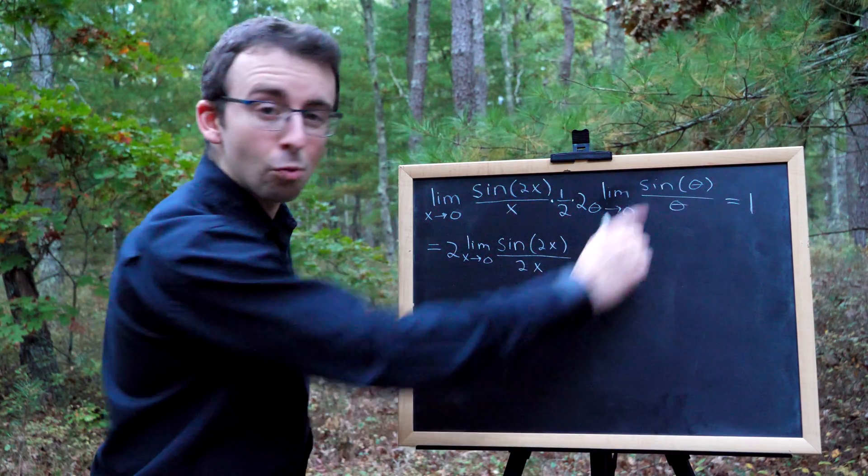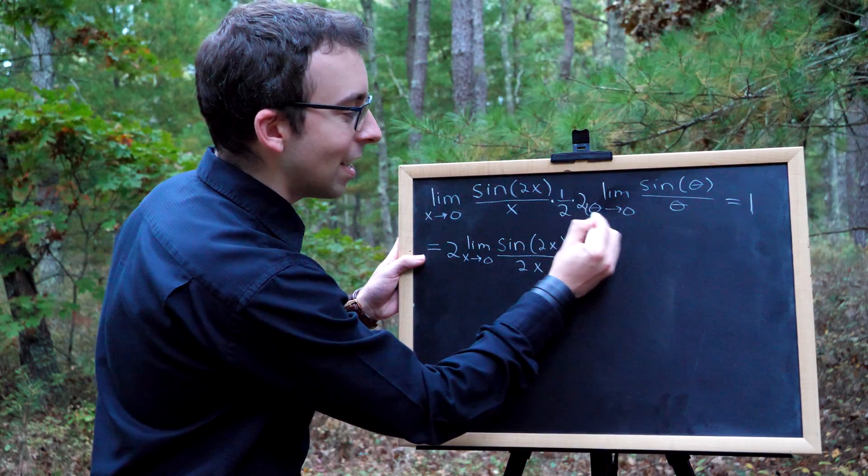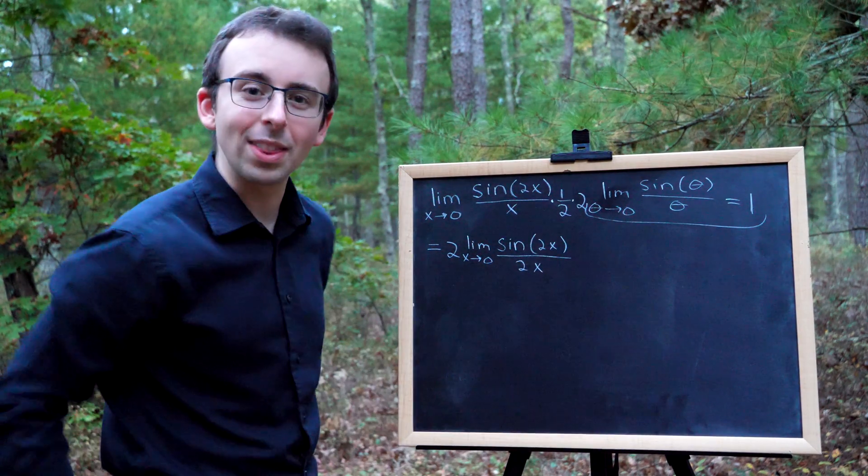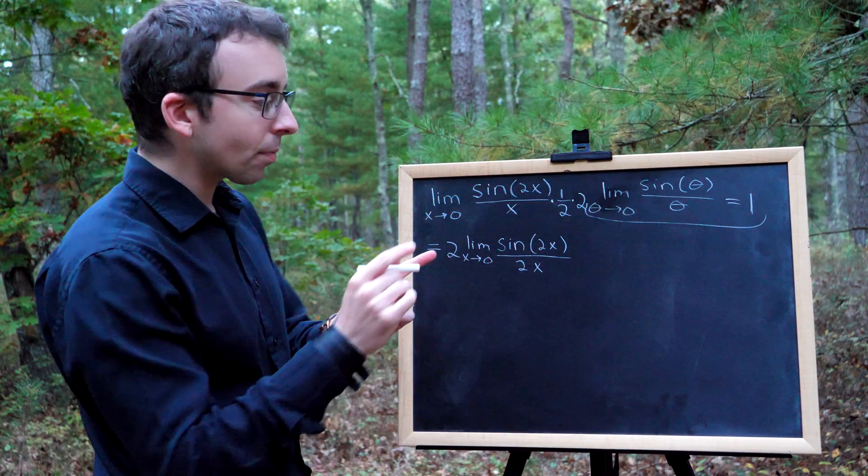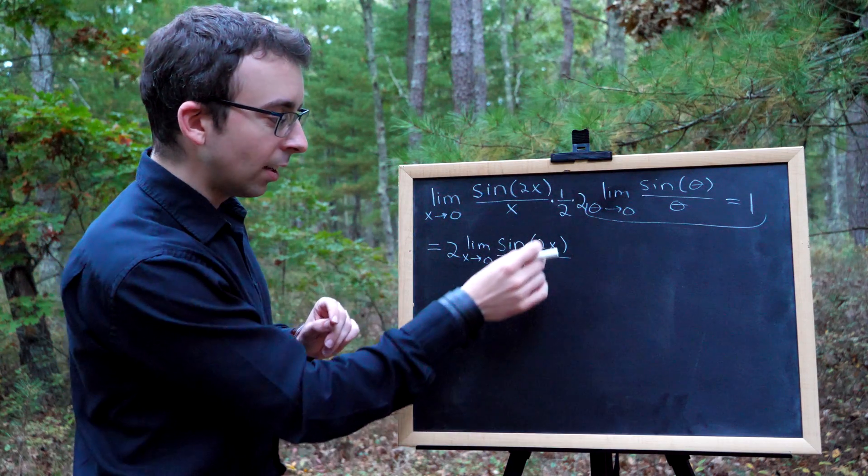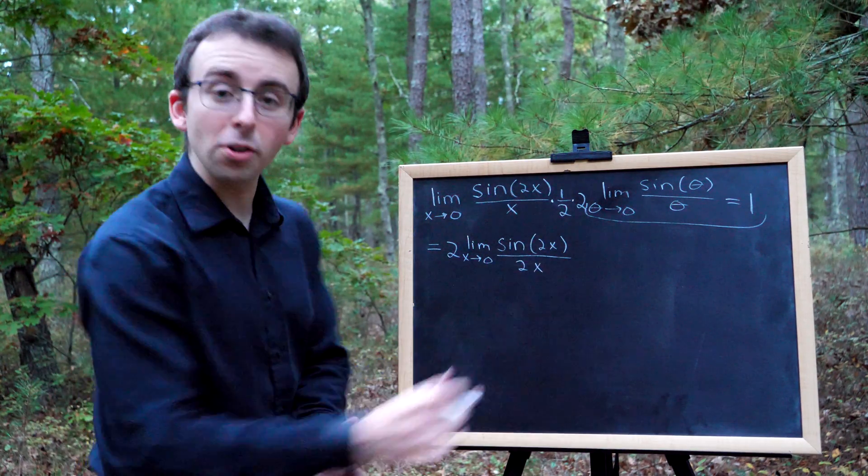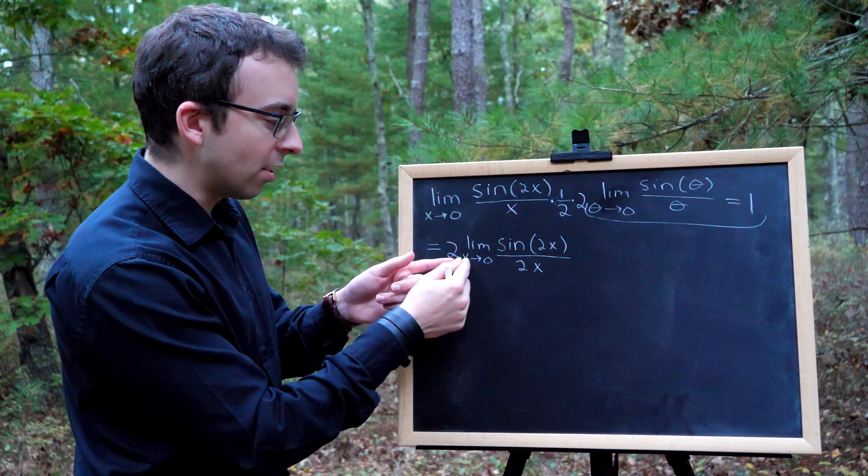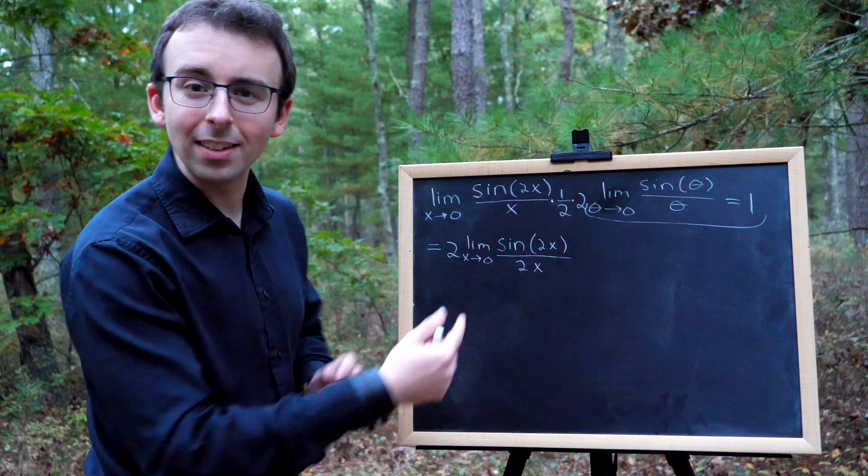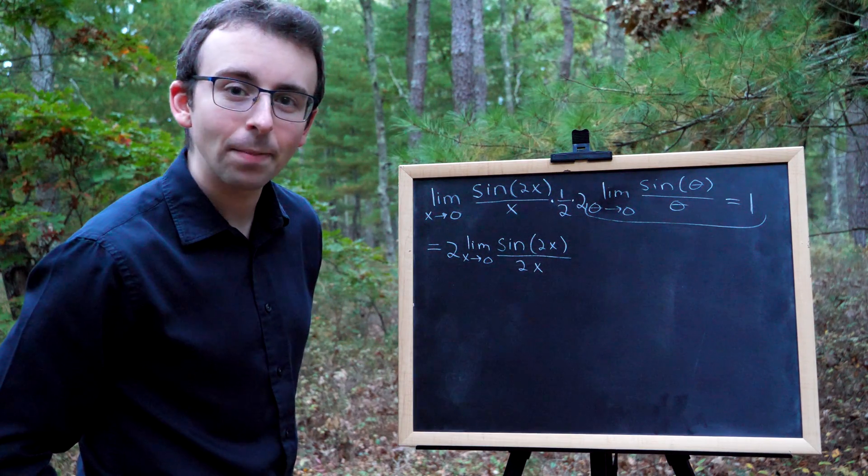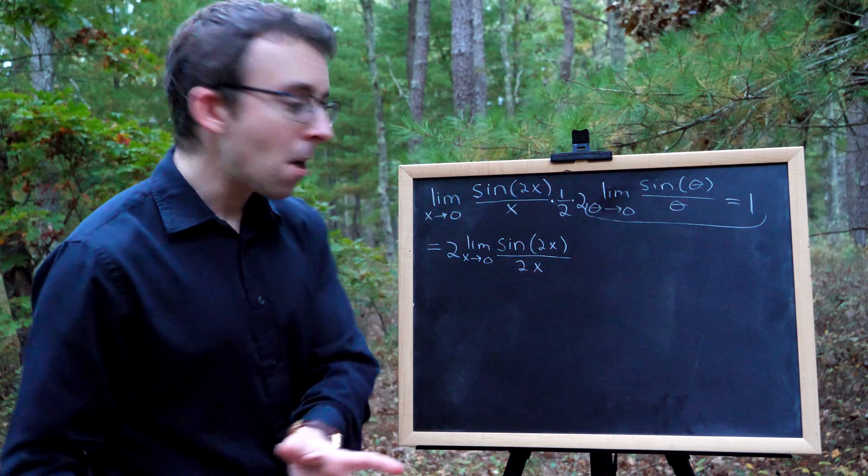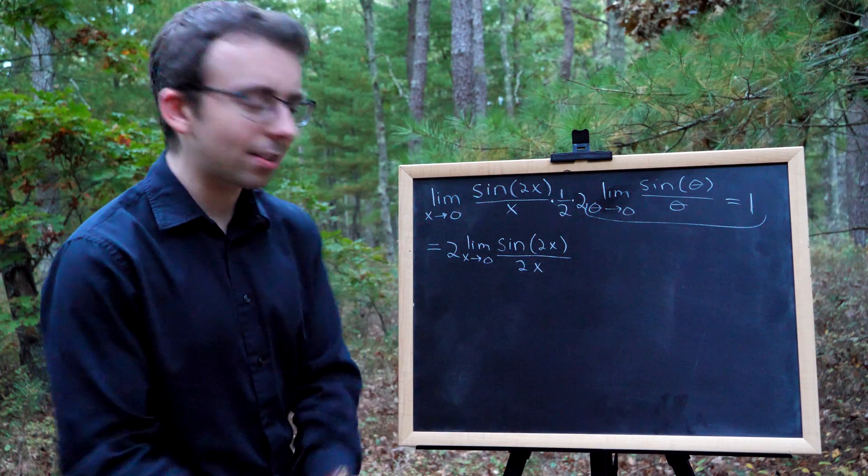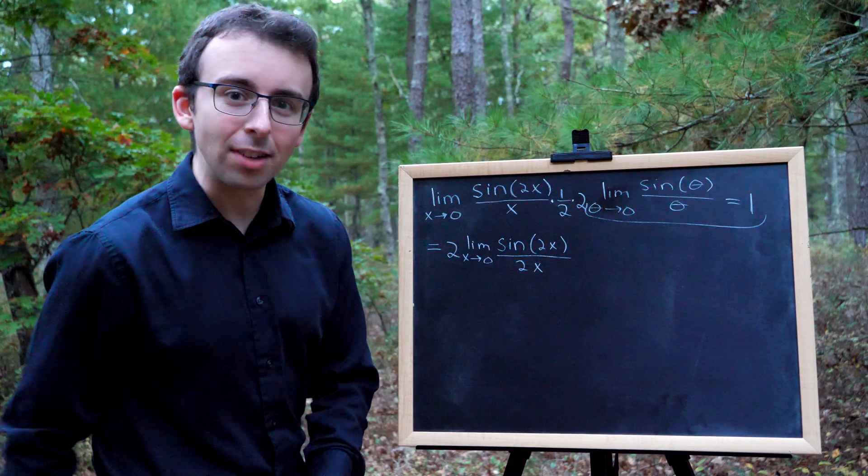Can we apply the rule now? This rule here that I almost touched with that 2? We can nearly apply it. The one problem is that we have sine of 2x over 2x, but it's not 2x approaching 0. It's x approaching 0. But that's no problem at all.